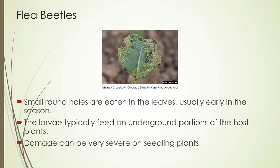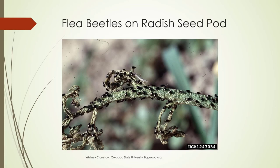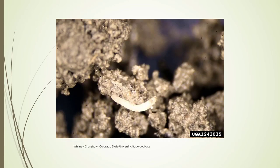You get small round holes eaten in the leaves, usually early in the season — this is a broccoli leaf. The larvae feed on the underground portions of host plants while the adults are on the foliage. A lot of beetles have two stages of feeding: usually roots for larvae and foliage for adults. Damage on seedling plants can be pretty severe. There's also an assassin bug — a light-colored tan insect — that will feed on these flea beetles.